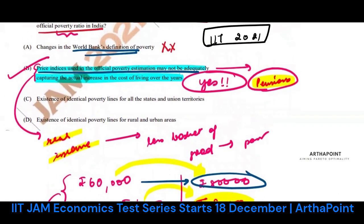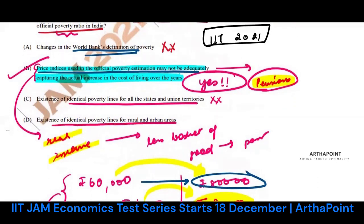Option: existence of an identical poverty line for all states — this doesn't matter. How would that lead to underestimation of poverty?